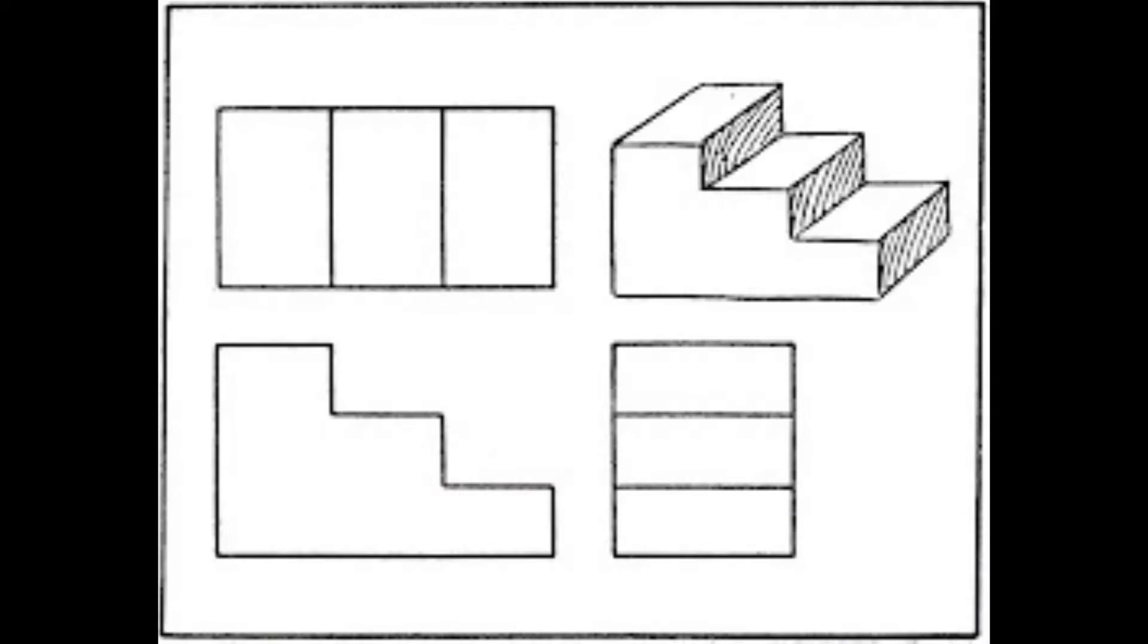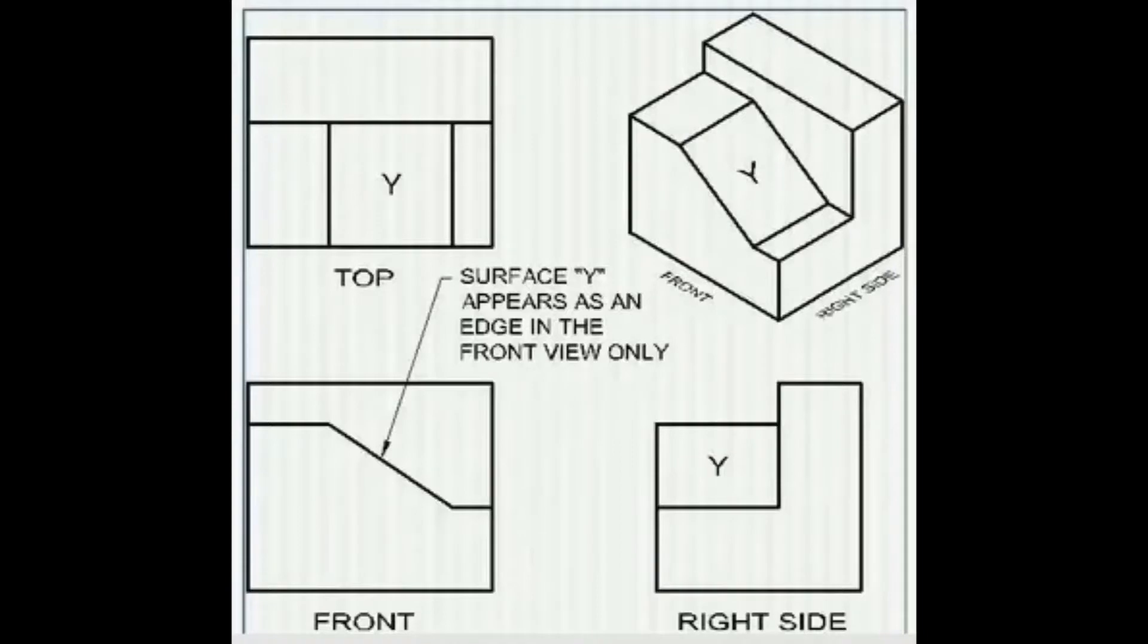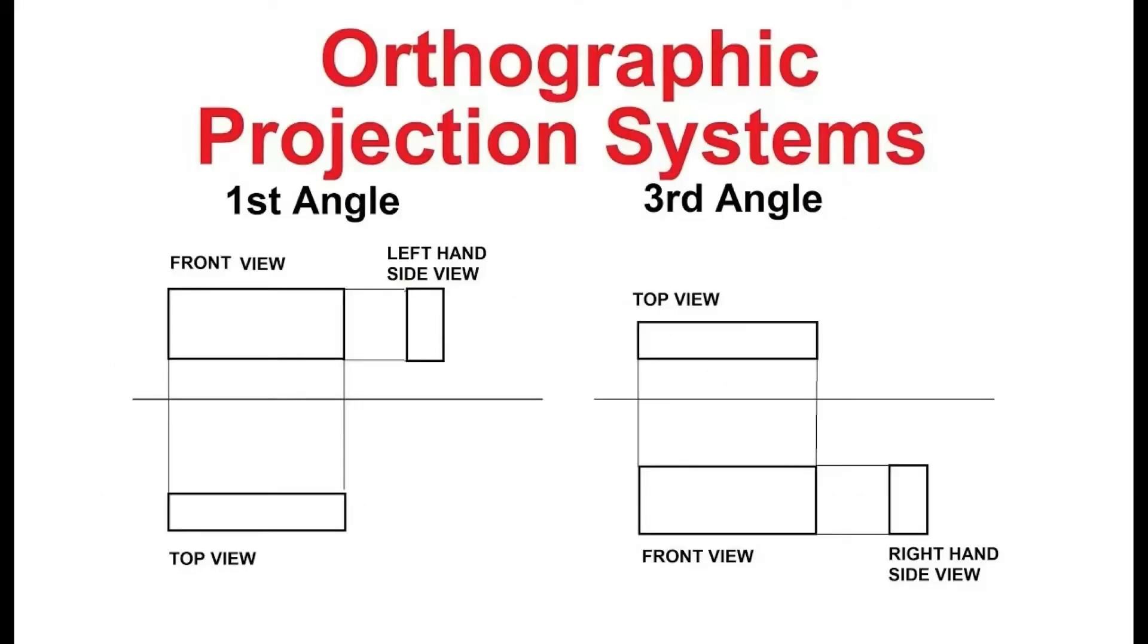In the first angle projection, the object is placed in the first quadrant. The object is positioned at the front of the vertical plane and top of the horizontal plane. The object is placed between the observer and the projection planes.